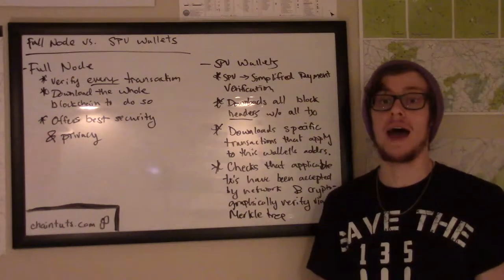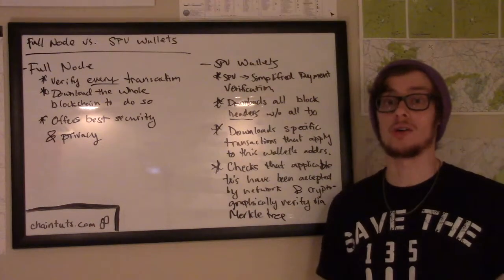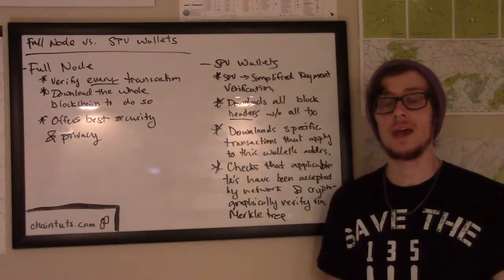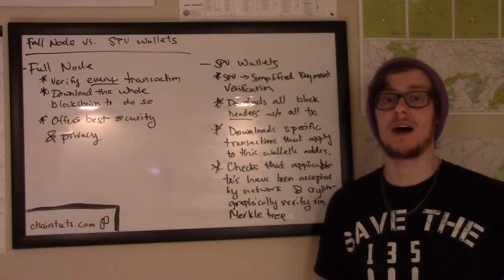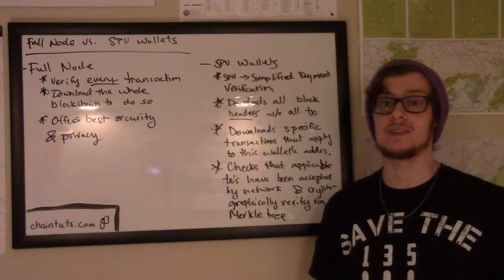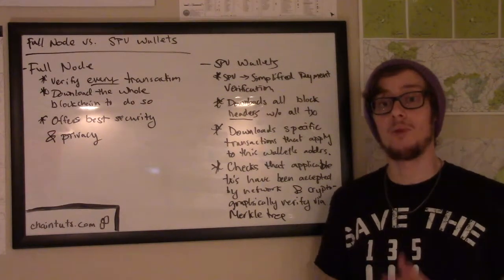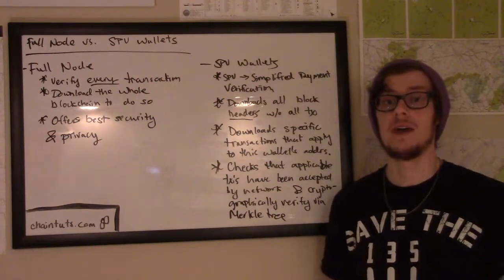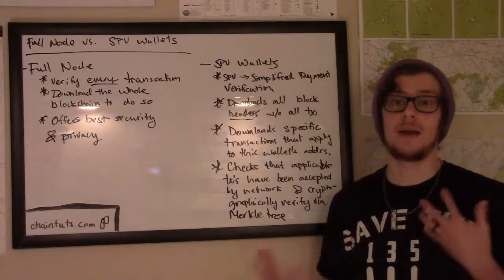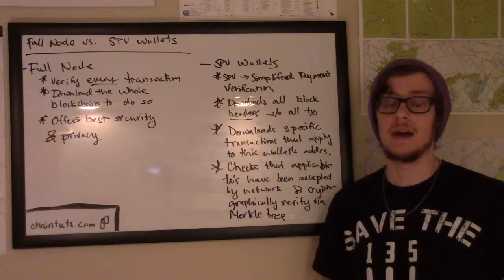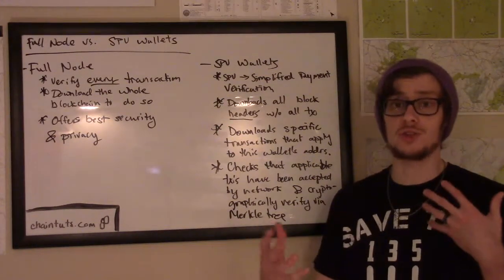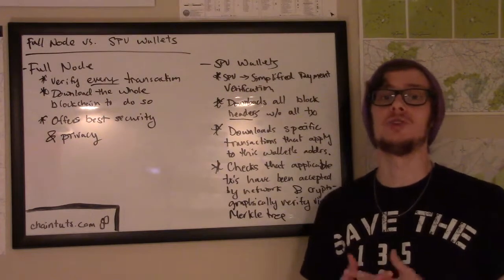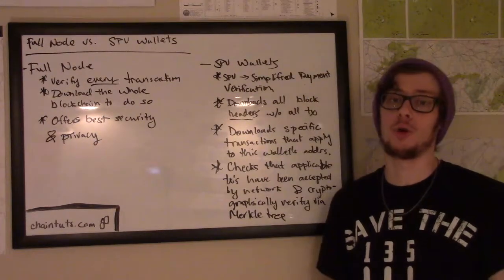So if Alice sends Bob some amount of currency and Bob is the owner of a full node wallet, his wallet can perfectly verify that the money is in fact his. So when Bob goes to send another user on the network some amount of currency, the network will definitely accept that amount of money. And it's much harder to pull off a fraud when somebody is using a full node wallet.